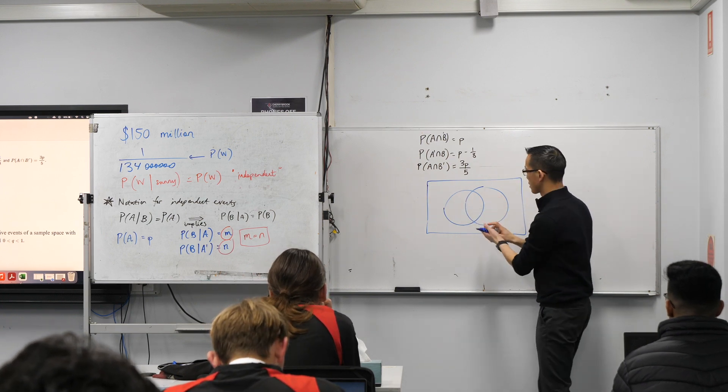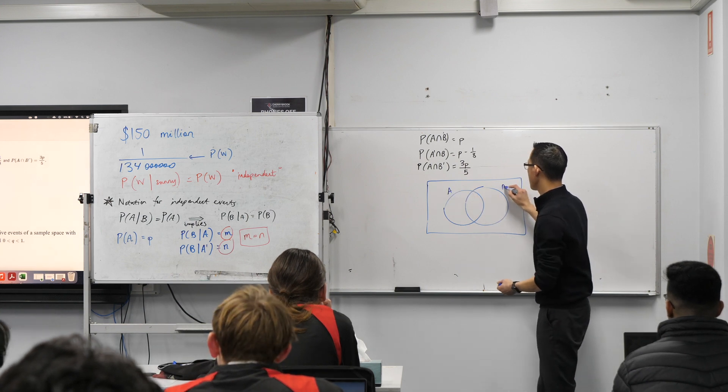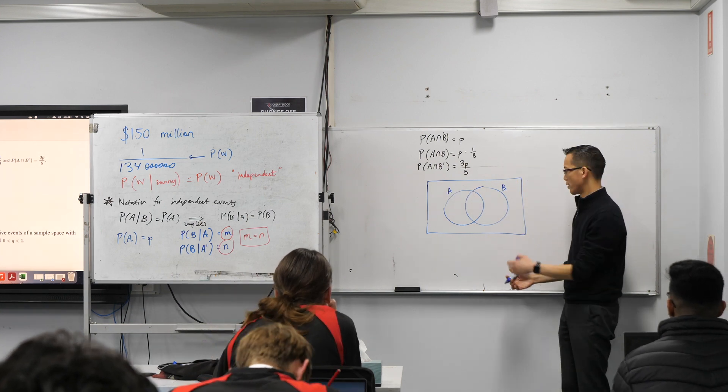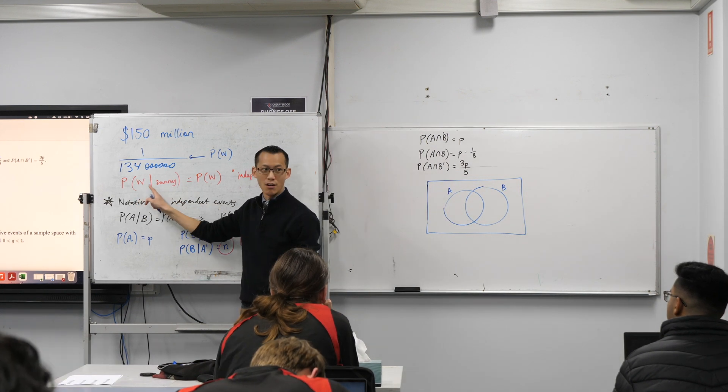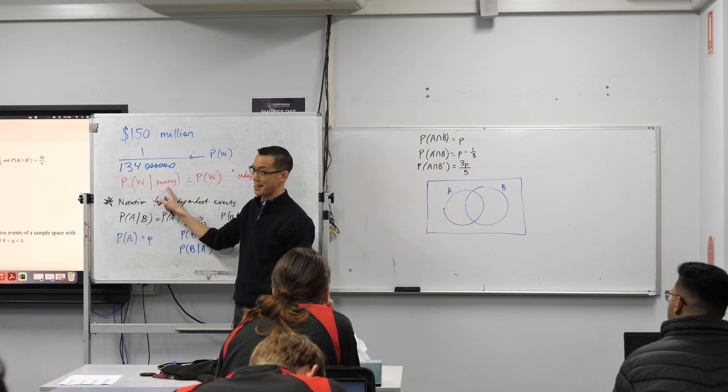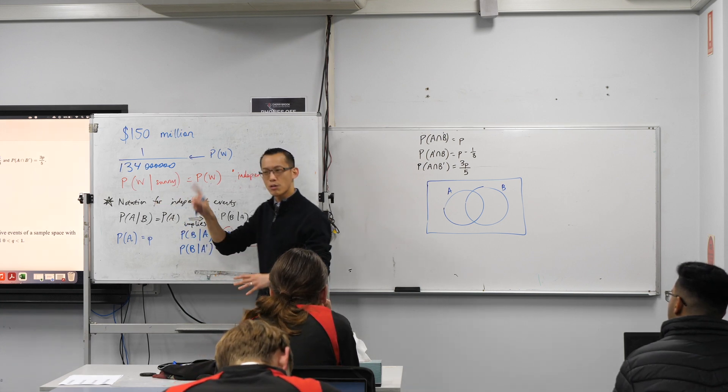These two things, let's call them A and B, aren't necessarily the entire universe. Things can happen outside of that. You can sometimes lose the lottery on a non-sunny day. That happens all the time, right?